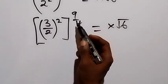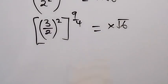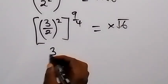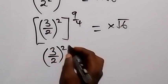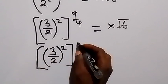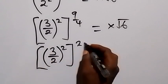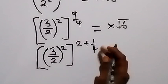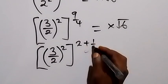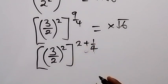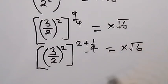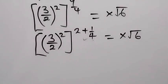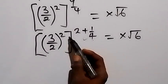From here we can separate this power, which is 9 over 4, and write it as 2 plus 1 over 4. So we have 3 over 2 raised to power 2, then raised to power 2 plus 1 over 4. We can write 9 over 4 as 2 plus 1 over 4, and this equals x root 6.